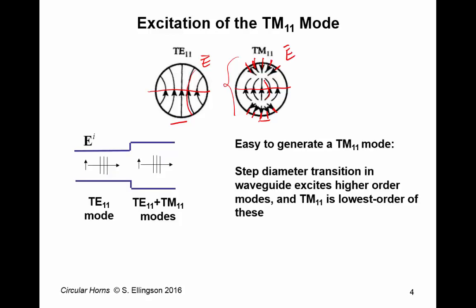Now, it turns out that it's really easy to generate a TM-1-1 mode, and the classical and by far most common way to do it is simply to start with the waveguide that has a TE-1-1 mode in it, that simplest possible mode, and then increase the diameter of the waveguide.